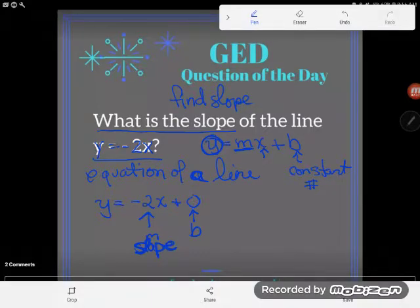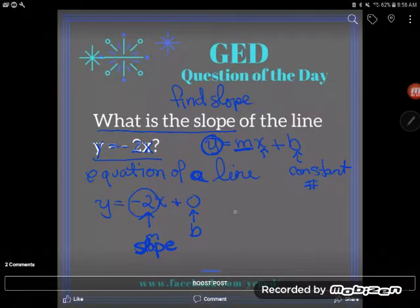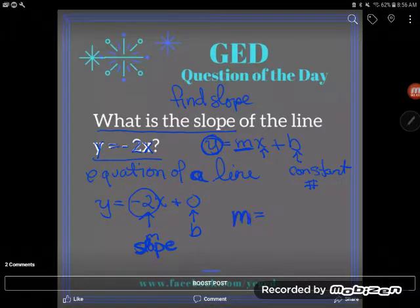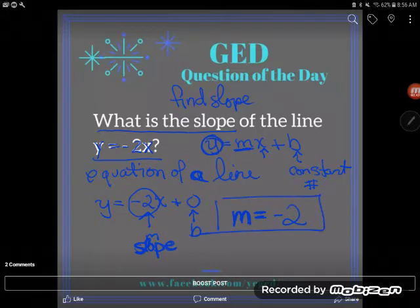Basically whatever number is multiplying with x is your slope. So what's the slope of this line? The slope of this line, and I'm being too lazy to spell—I'm a mathematician, I don't spell out words—so I'm saying the slope m is -2. And I wrote that in a complete math sentence, and I'm done. The slope is -2.